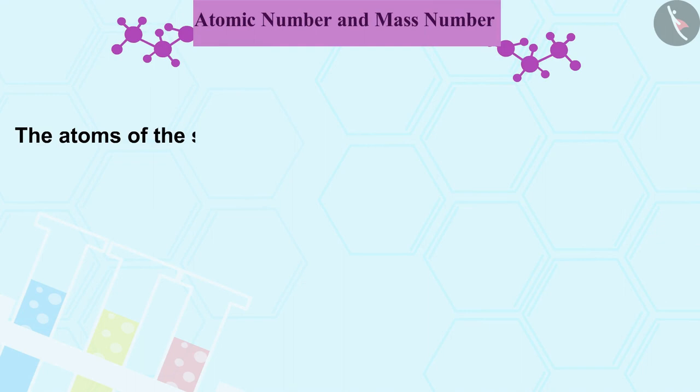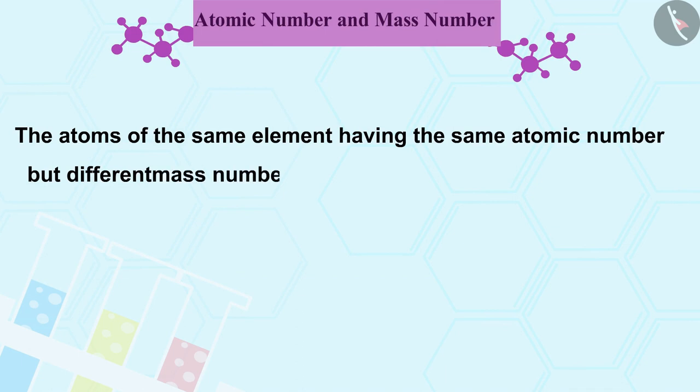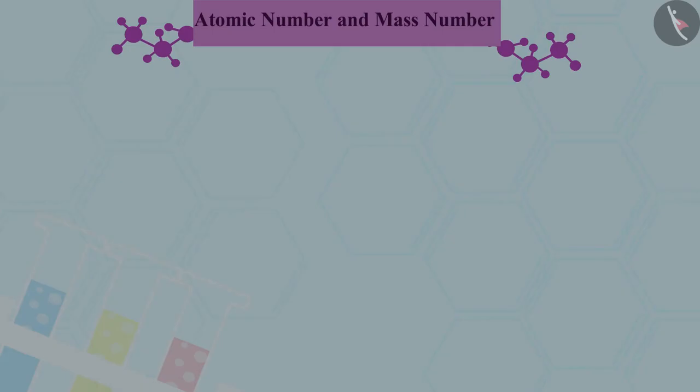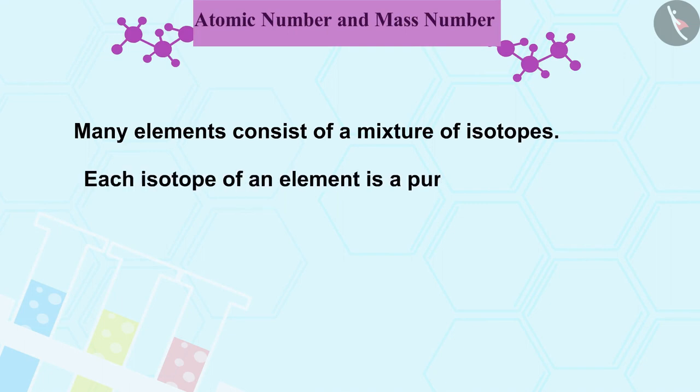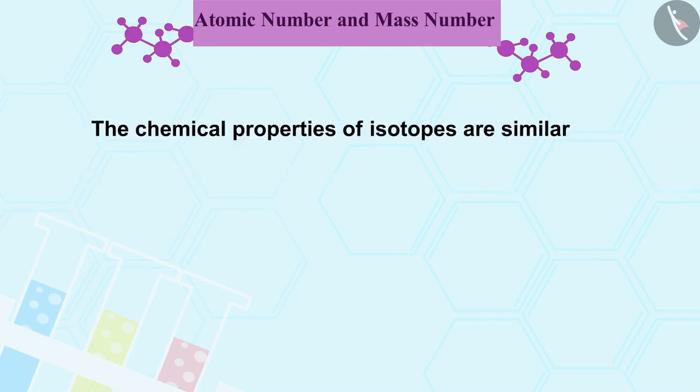The atoms of the same element, having the same atomic number but different mass numbers, are called isotope of that element. Many elements consist of a mixture of isotopes. Each isotope of an element is a pure substance. The chemical properties of isotopes are similar but their physical properties are different.